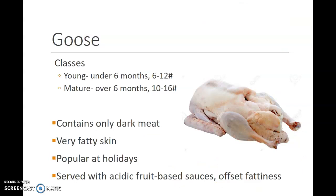Goose is broken into two classes. You have young and mature gooses. Young are under six months old and range from six to twelve pounds. Mature gooses are over six months and range between ten and sixteen pounds on the average. Goose contains only dark meat, and it is extremely fatty as well. All of the fat is found in the abdominal cavity as well as under the skin. Goose is very popular at holidays, and because of its strong flavor, it is served with acidic fruit-based sauces — a lot of times cherry and other sauces that will offset that fattiness.